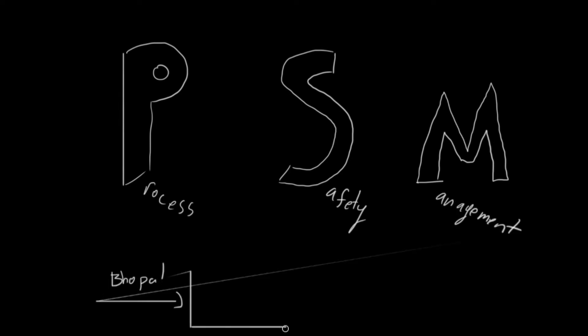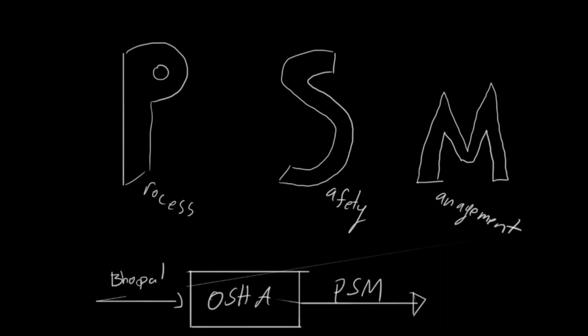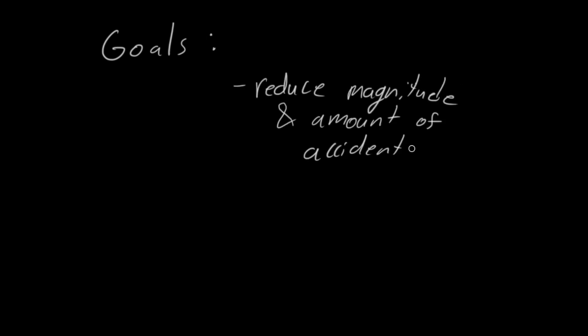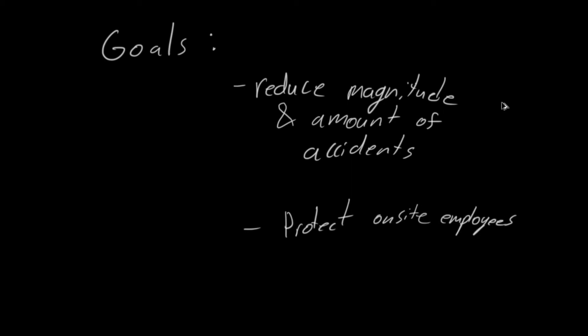Process Safety Management, or PSM, is a set of general standards and requirements created by OSHA after the Bhopal accident in India to manage hazards associated with hazardous chemicals. PSM's goal is to reduce the magnitude and number of accidents caused by hazardous chemicals and to protect on-site employees. This regulation is performance-oriented and requires active employee participation and adequate training on the process to be effective.